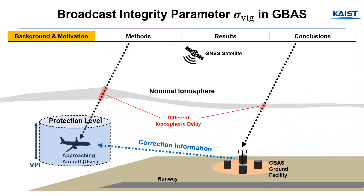For GBAS applications, almost all user GNSS errors are removed by using correction information from nearby GBAS ground facilities. However, residual correction errors remain due to the GNSS spatial decorrelation between the ground facility and users. This spatial decorrelation error should be taken into account when the user computes protection levels, which bound the 3D position error.